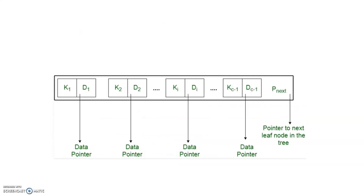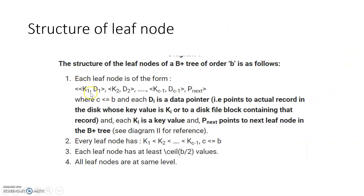Now the structure of the leaf node: every key is associated with one pointer, which is a data pointer pointing to the data in the database in secondary storage. There is one extra pointer that points to the next node. Each leaf node is in the form: K1, D1, K2, D2, ..., Kc. The leaf node is of order 'b' while internal nodes are of order 'a', so they can have two different orders. If two orders are not given, the same order is used for both.